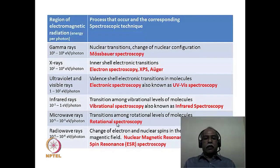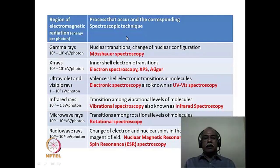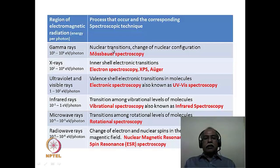This is defined in a particular table. Column one lists regions of electromagnetic radiation by energy per photon, starting from gamma rays, the most powerful, down to radio waves, the least energetic. The processes occurring in molecules and atoms corresponding to each energy regime are given in one column, and the corresponding spectroscopic techniques are given in red. For example, gamma rays are very powerful high-energy photons that can cause transitions within the nucleus, changing nuclear configuration — this essentially constitutes Mössbauer spectroscopy.